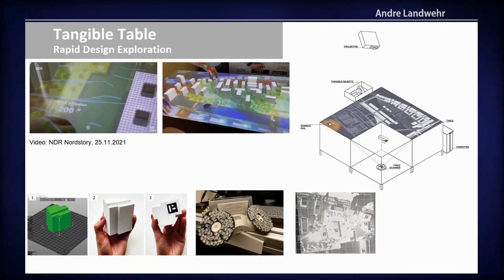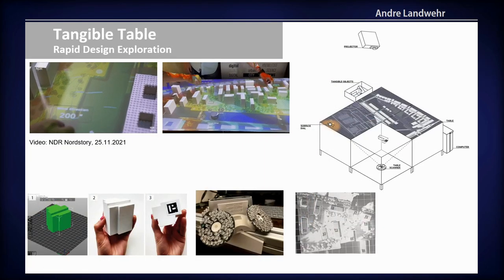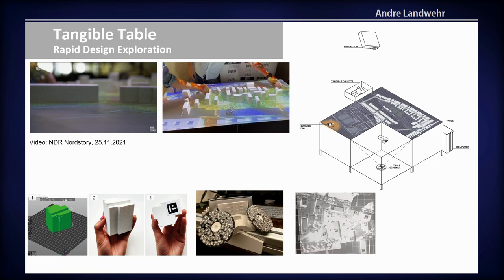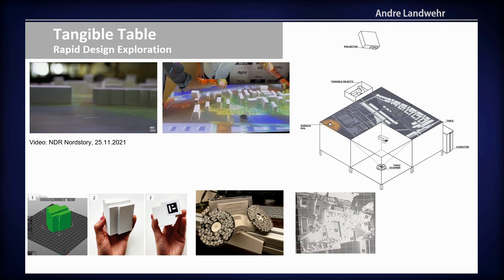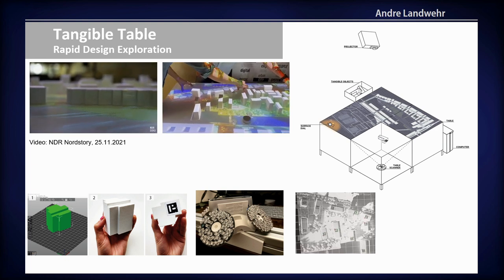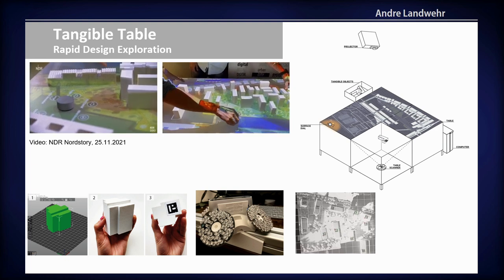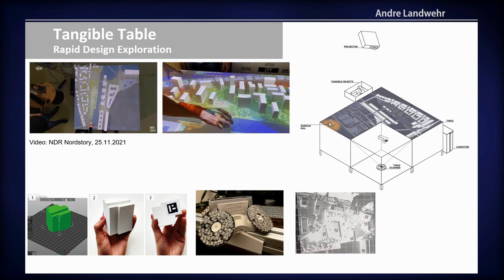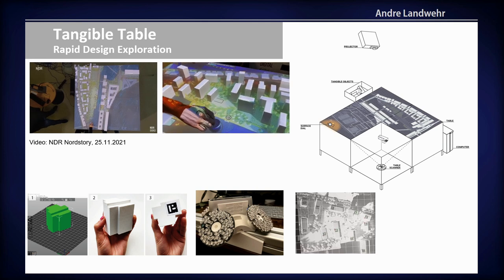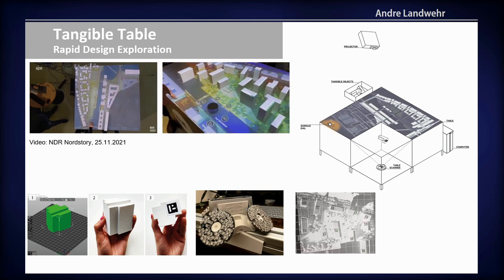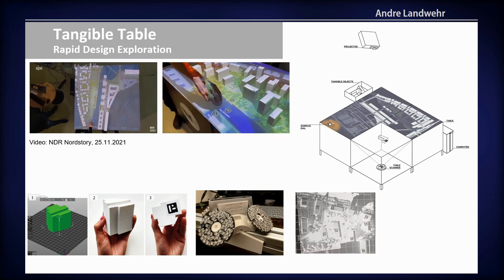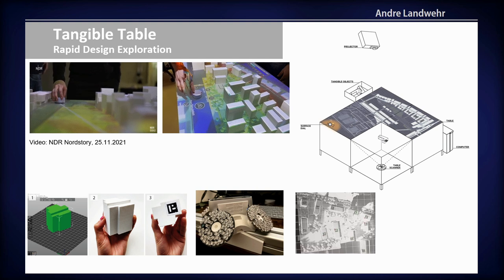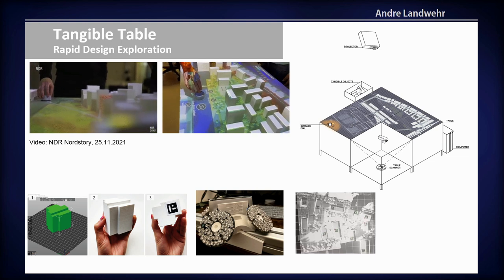The tangible table is something architects really love, because you can play around freely with 3D-printed objects, and it's much easier to see and understand the scale of the neighborhood once you have a 3D model in front of you. You can move buildings around freely — they are tagged with Aruco markers, then read by infrared-enabled cameras so the system knows where they are positioned.